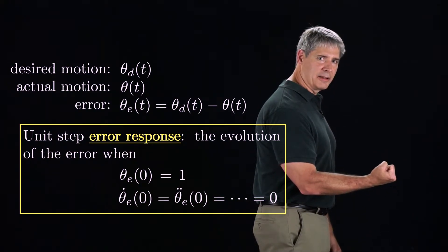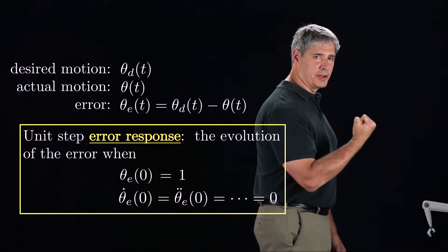imagine that the desired angle of your elbow joint is zero, and the actual angle matches it exactly. Then suddenly you request the constant joint angle of one radian. At that instant, which I'll call time zero, the error is one radian. If the controller is a good one, over time it should reduce the error.